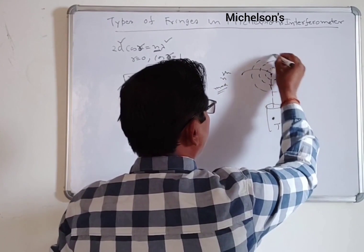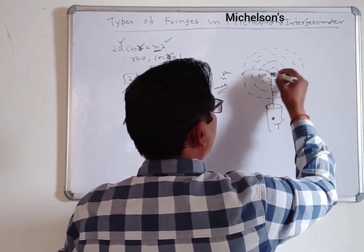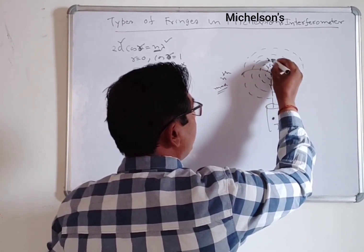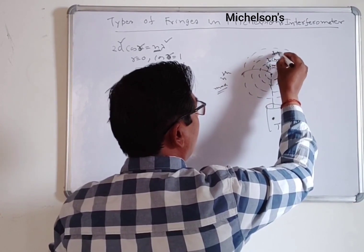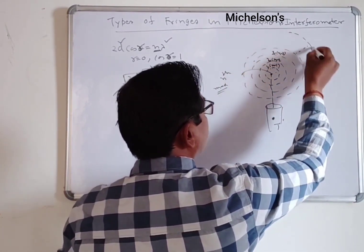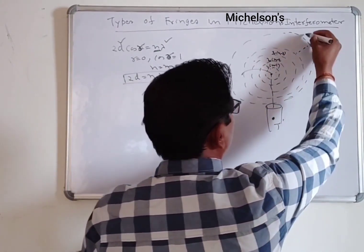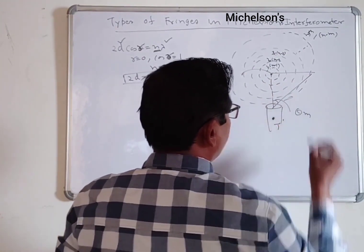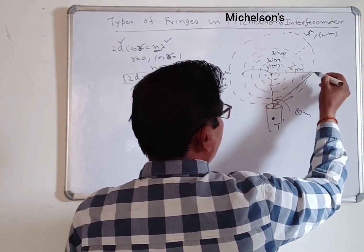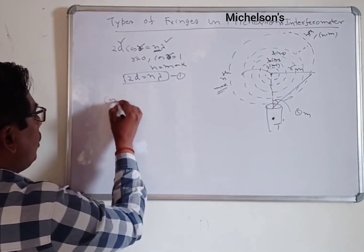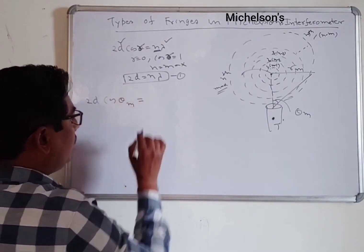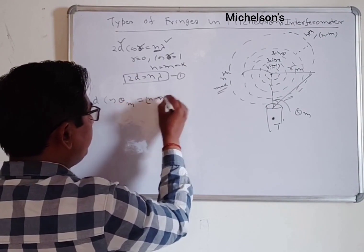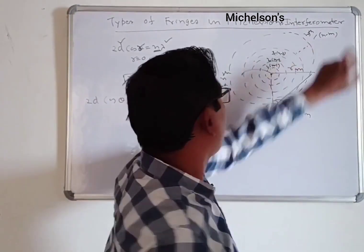The first ring has order n−1, the second ring order n−2, the third ring order n−3, and the mth ring has order n−m. Suppose the mth ring makes angle θm and has radius r_m. Then 2d cos θm = (n−m)λ.